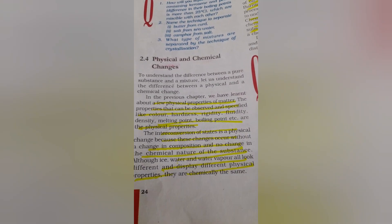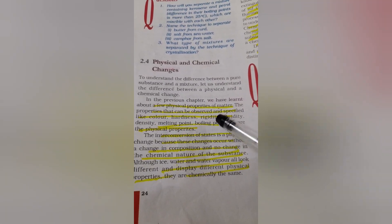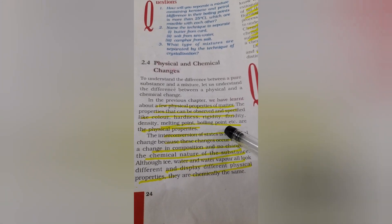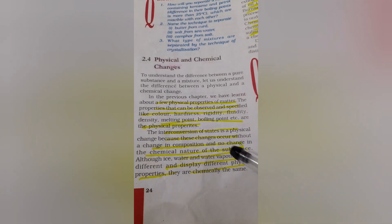The properties which you can observe like color, hardness, rigidity, fluidity, fluidity means the tendency to flow, density, melting point, boiling point, so many physical properties are there.